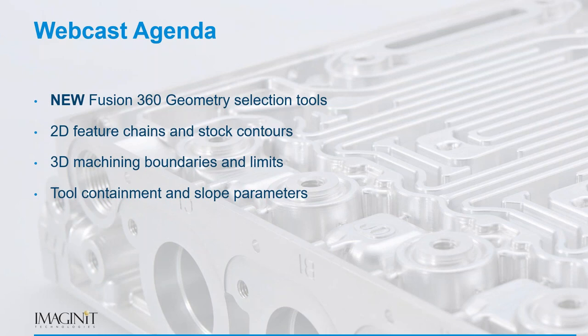We'll talk about 2D feature chains and stock contours — getting into 2D pocketing, roughing, and contouring toolpaths and how the new selection methods play out. We'll also talk about 3D boundaries. 3D machining is more complicated when it comes to creating boundaries and limits — you have a bit more work to do when containing your tool. It's not as automatic as a 2D feature because the feature itself is more complex. We'll also cover tool containment, slope parameters, and advanced options to fine-tune your toolpath.